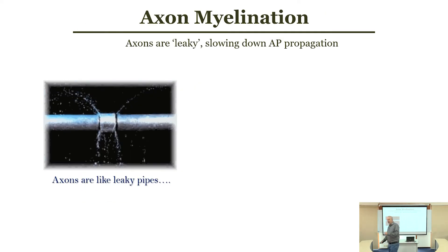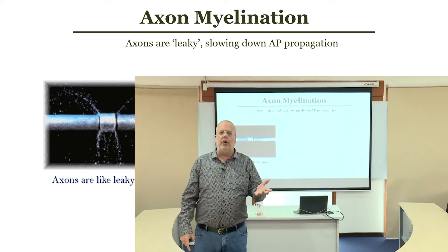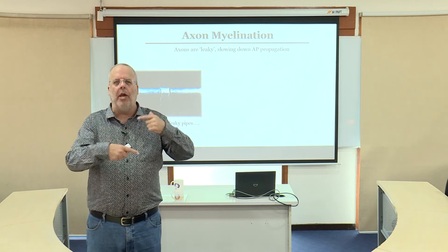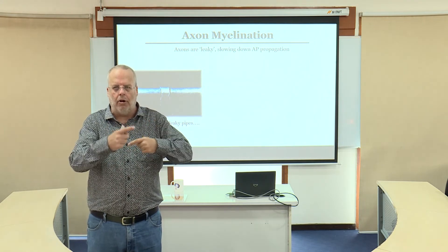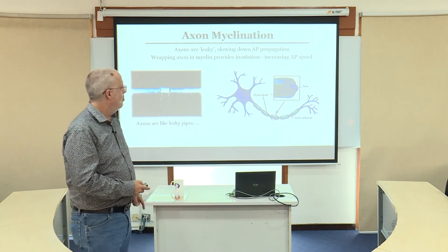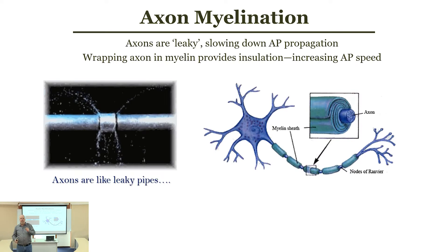The other part is that axons are leaky — there are sodium and potassium channels where ions are just kind of leaking out all the time. Imagine a leaky water pipe: one way to fix it is to wrap it in duct tape, insulating it so the leak no longer occurs. Well, nature has settled on a similar solution. We have something called myelin — a fatty substance that is wrapped around an axon — which provides that insulation to block those leakages.